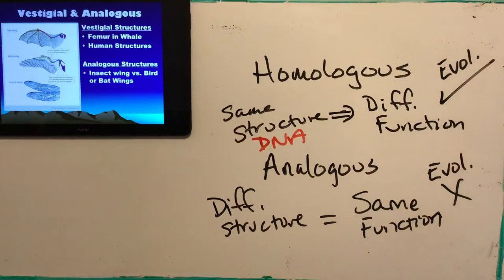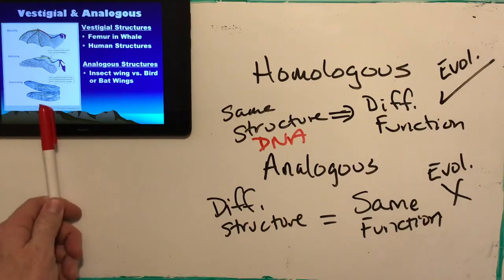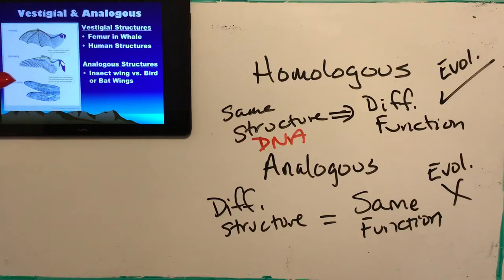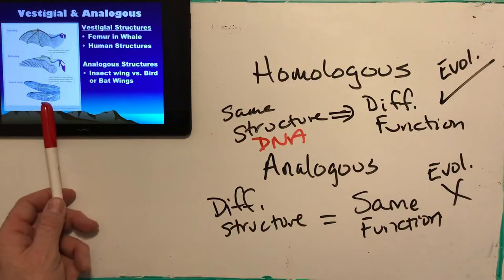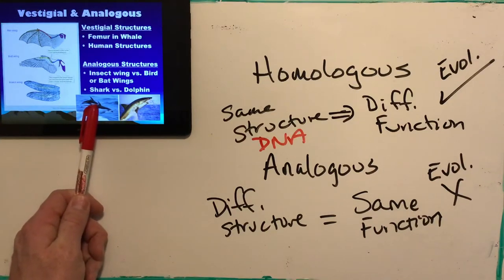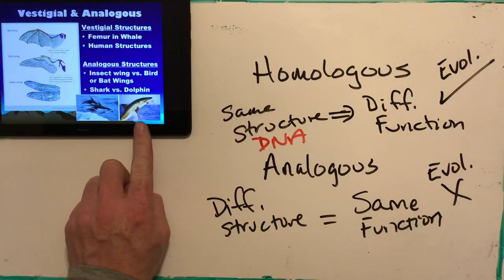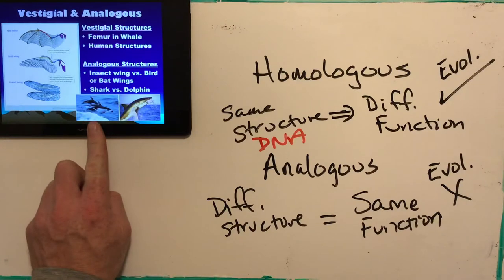Here's a visual: a bat and a bird are homologous structures - both have similar internal bone arrangements. But insect wings, like dragonfly wings, don't share those same structures, making them analogous - same function of flying but very different architecture inside. Similarly, a shark and a dolphin both have pectoral fins and dorsal fins because the ocean's checklist says having those helps you move around, even though one is a cartilaginous fish and one is a mammal.